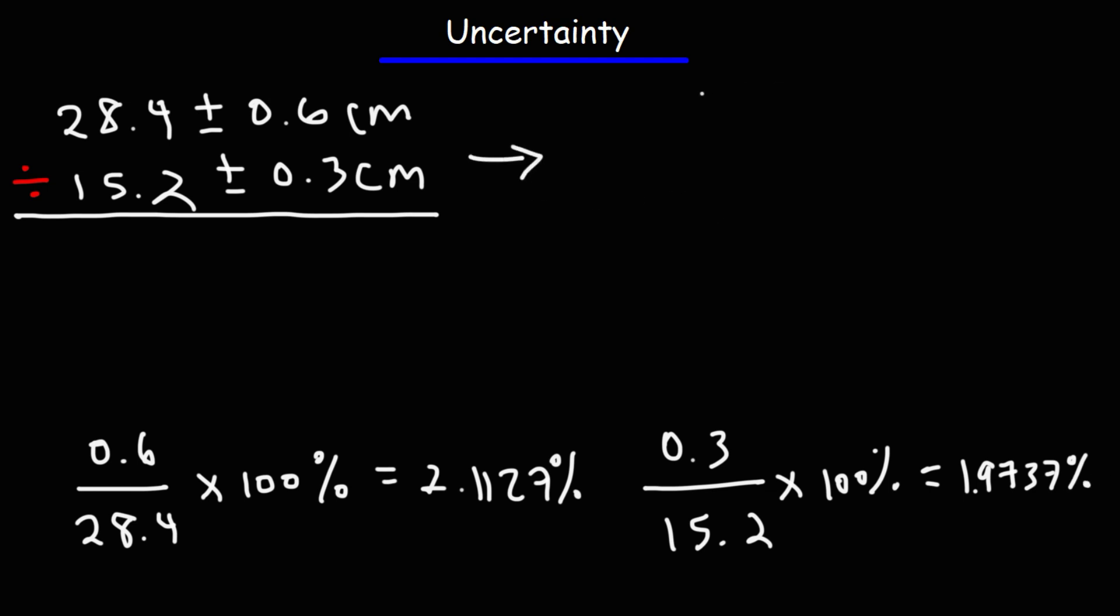Now let's rewrite the problem. So this is going to be 28.4 plus or minus 2.1127%. And then the bottom number, 15.2 plus or minus 1.9737%. And we're still dealing with division.